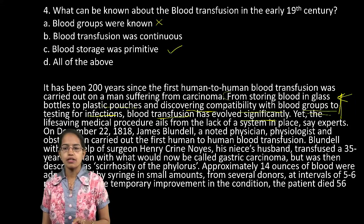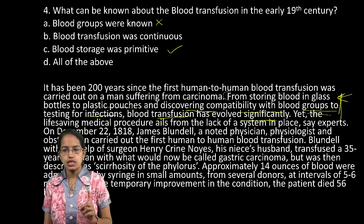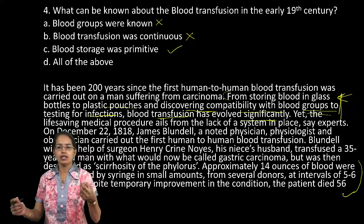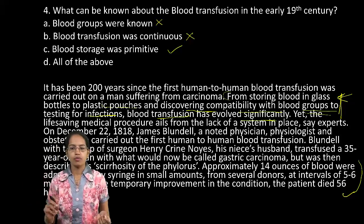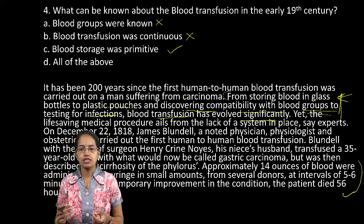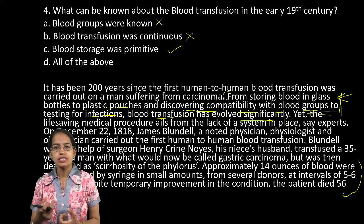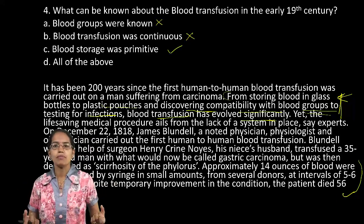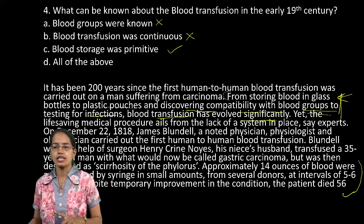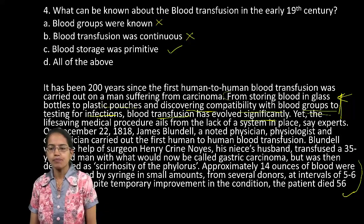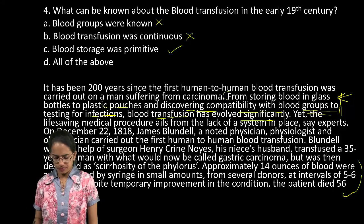I hope that's clear. Since A and B are incorrect, D cannot be the correct answer either. Let's move on to the next question: what is true regarding the duo of Blundell and Noyes? You have the section of the paragraph that indicates the correct answer. Just read this section and bring the correct answer for question number five.